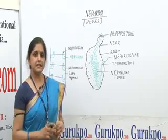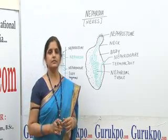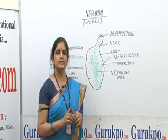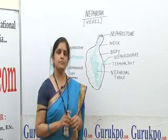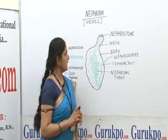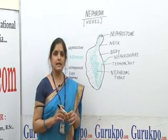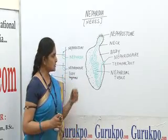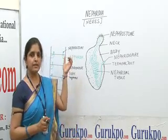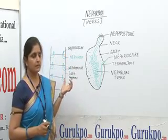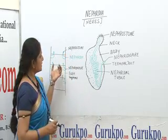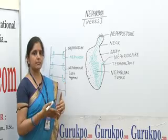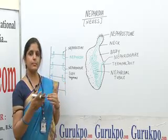Nephridia is the excretory organ of Nereis, and Nereis is a polychaete of phylum Annelida. A key character of Annelida is the presence of Nephridia. Since Nereis is a segmented animal, the excretory organ is present in each segment and it is present in pairs.